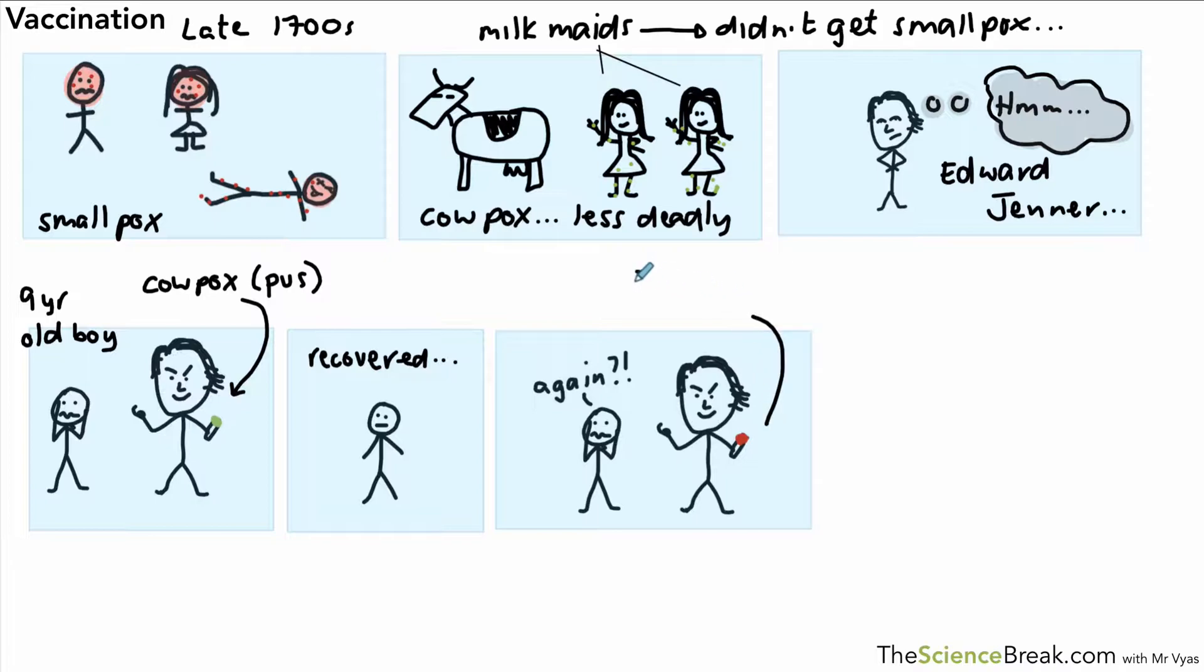Again it was the pus from a blister from somebody who actually had smallpox and this was done by scratching the skin and making sure that got into the blood. Now miraculously, or rather luckily for the boy, he did not suffer from the disease smallpox and we could say that this was the very first vaccination ever.